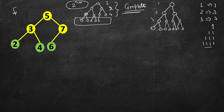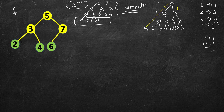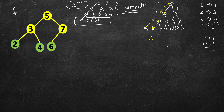We start a left pointer and a right pointer. The left pointer always goes left until it reaches a leaf node, counting each step. So here it counts one, two, three, four — left height is four. Similarly, the right pointer keeps going right. Initially both left and right start at root.